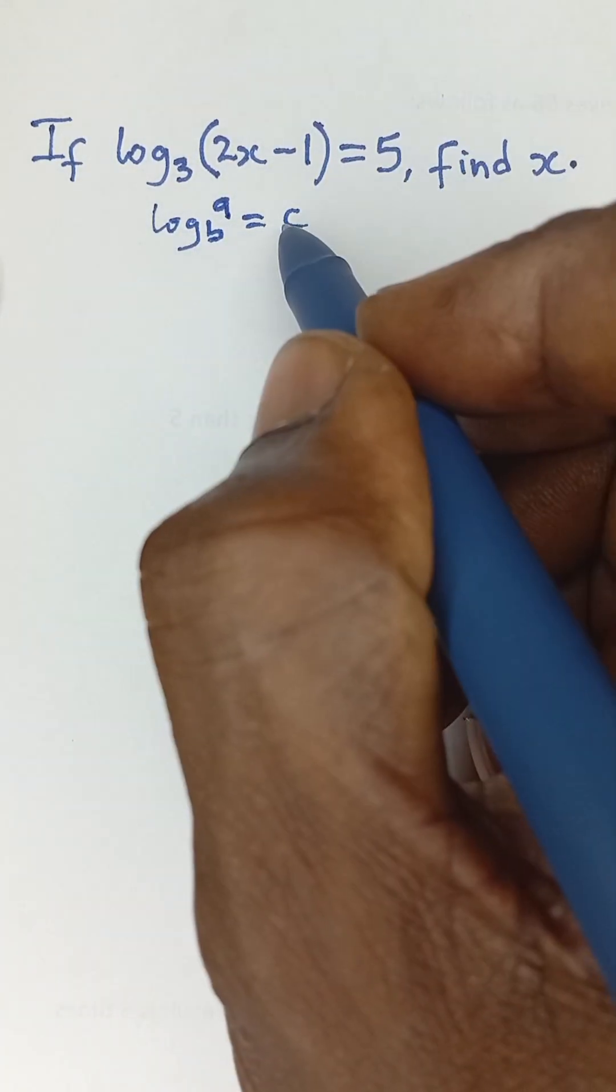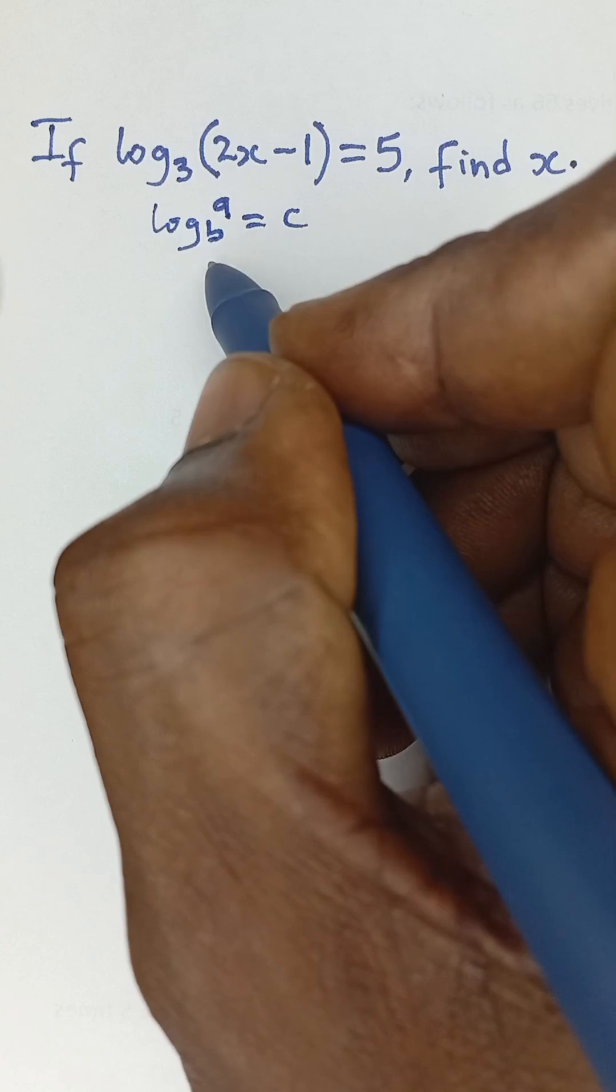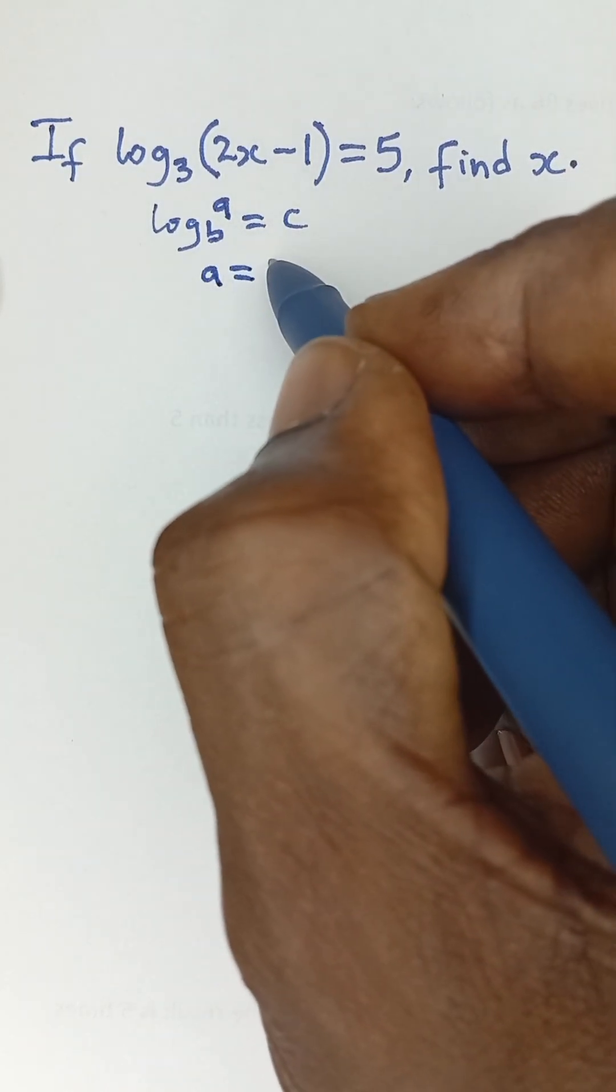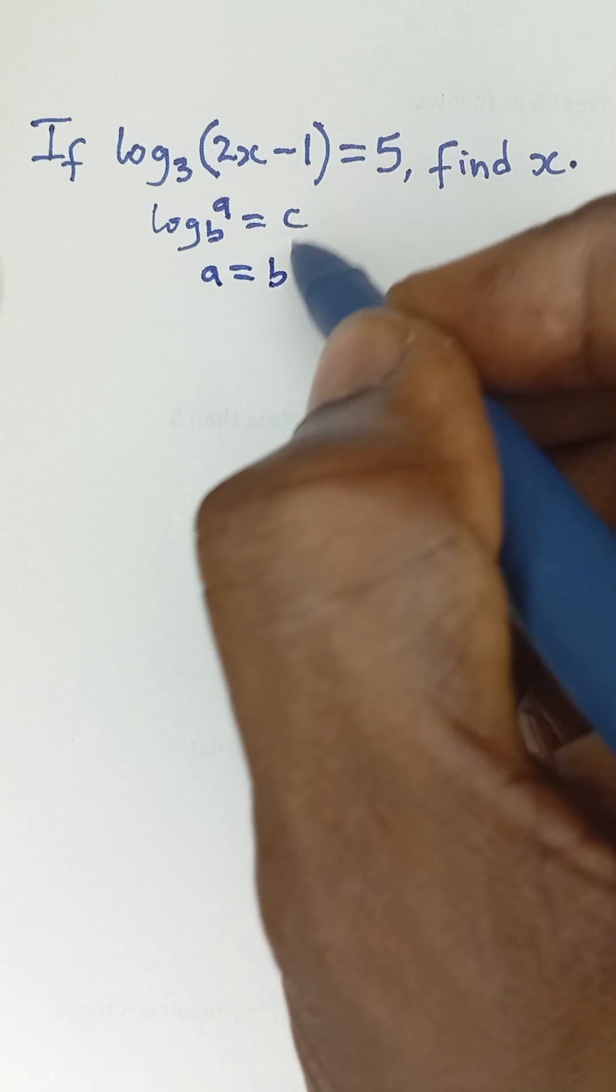If you express this in index form, it's going to be the a that we have here is equal to the b, which is the base, raised to the power of this c.